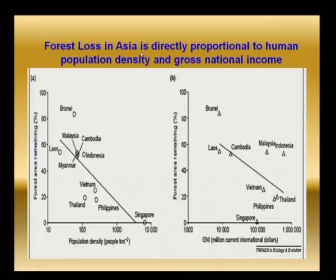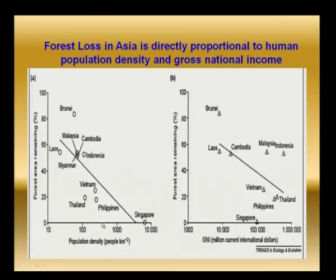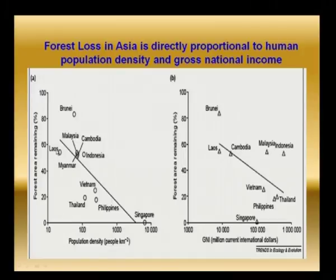Forest loss in Asia is directly proportional to human population density and gross national income, because Asian countries are highly populated. As population density increases, the forest area remaining decreases — a negative correlation. Countries like Laos, Myanmar, and Vietnam have lower population density and more remaining forest, while countries like Cambodia, Indonesia, and Singapore have higher population density and less remaining forest.